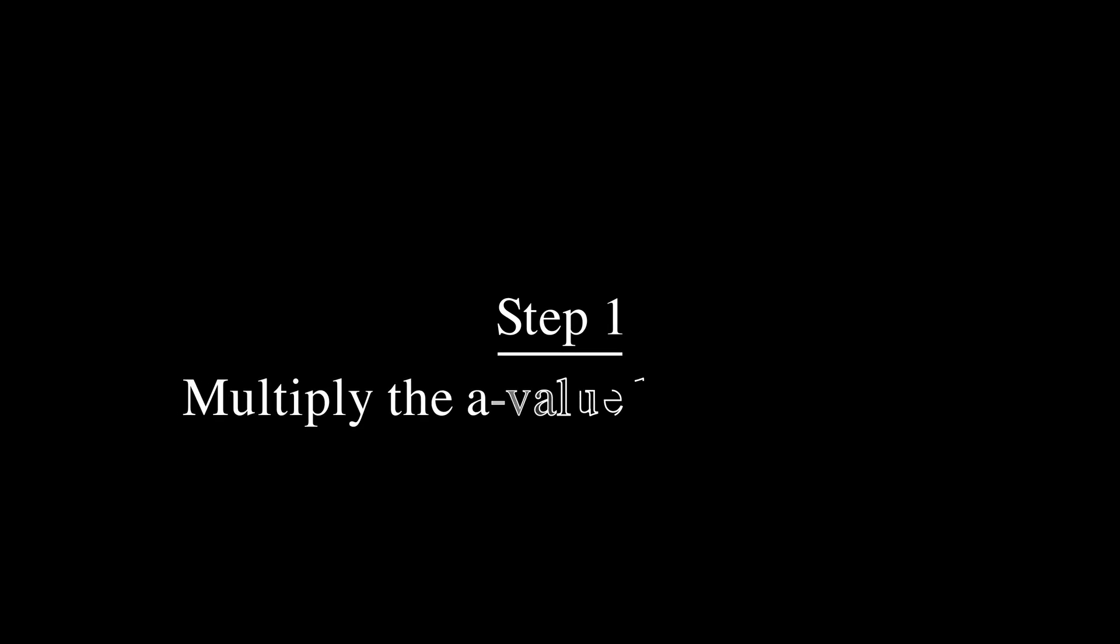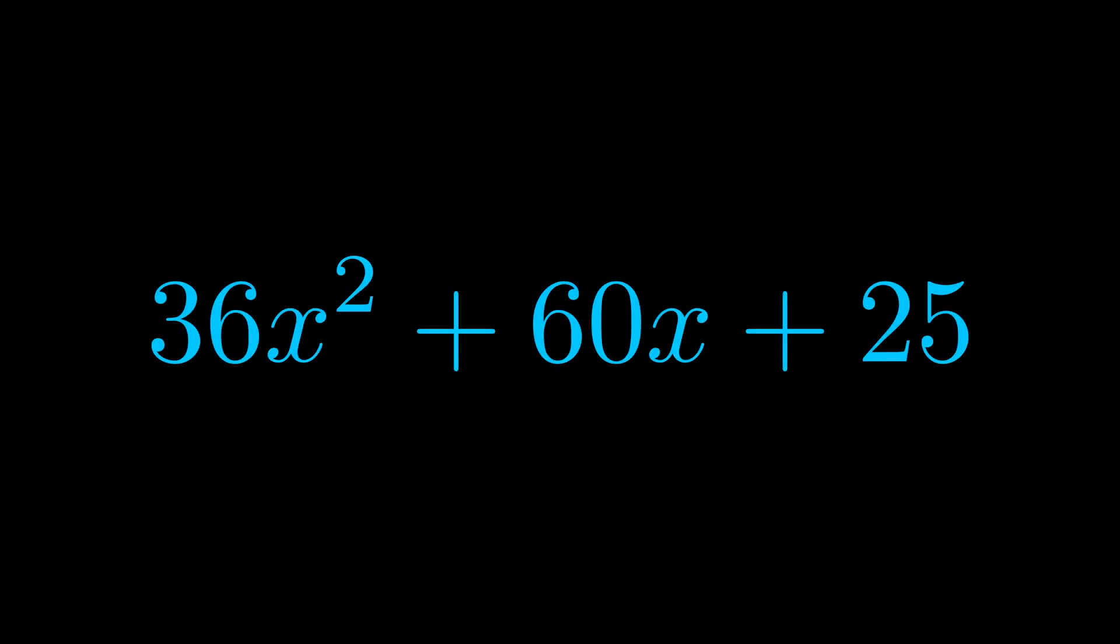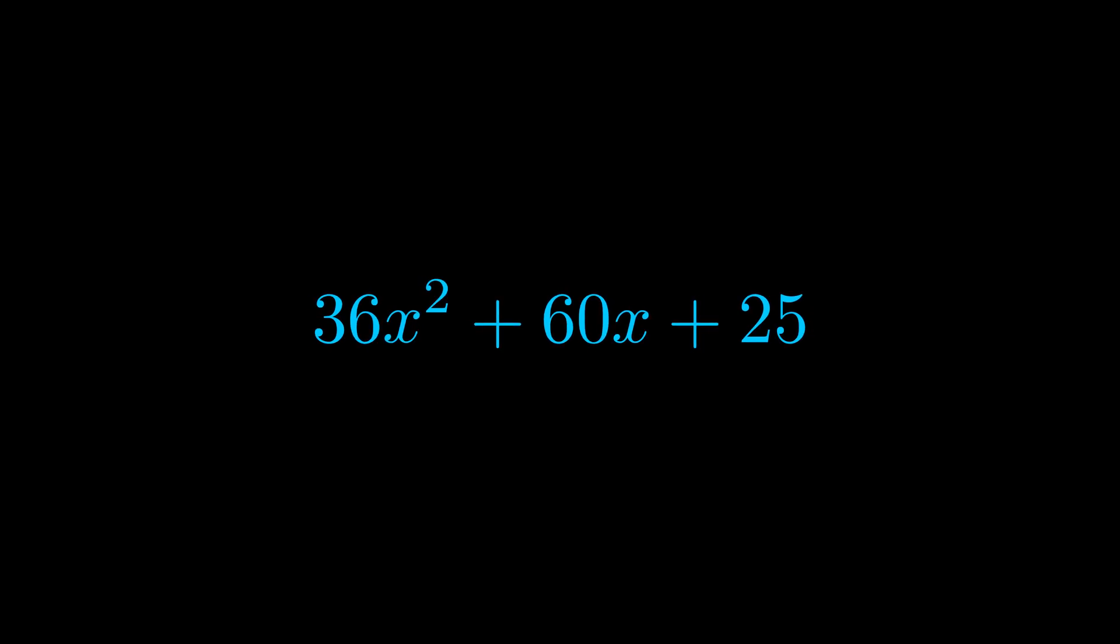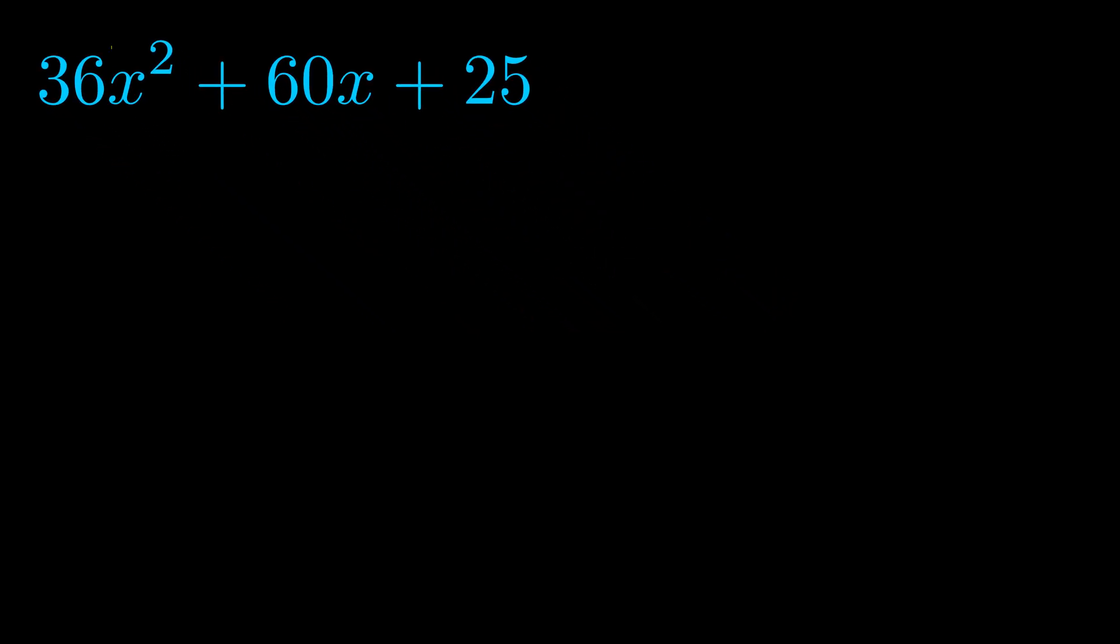Step one when factoring an equation of this form is to multiply the a value by the c value. Here we can see that our a value is the coefficient on the x squared term and our c value is the constant term.